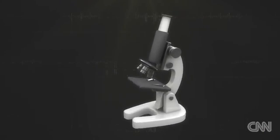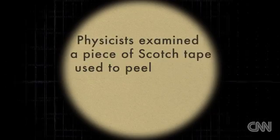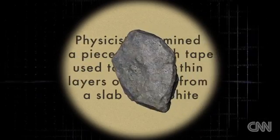That's right, graphene is the world's first two-dimensional material. How is this even possible? For decades, scientists weren't even sure that it was, until 2004 when physicists examined a piece of scotch tape used to peel off thin layers of carbon from a slab of graphite.